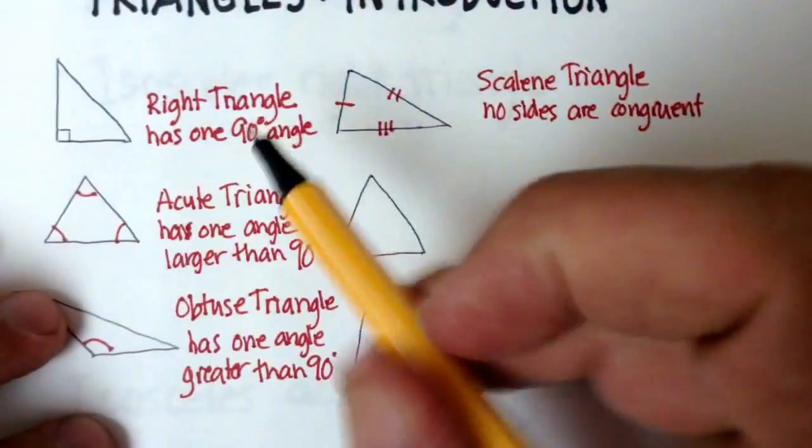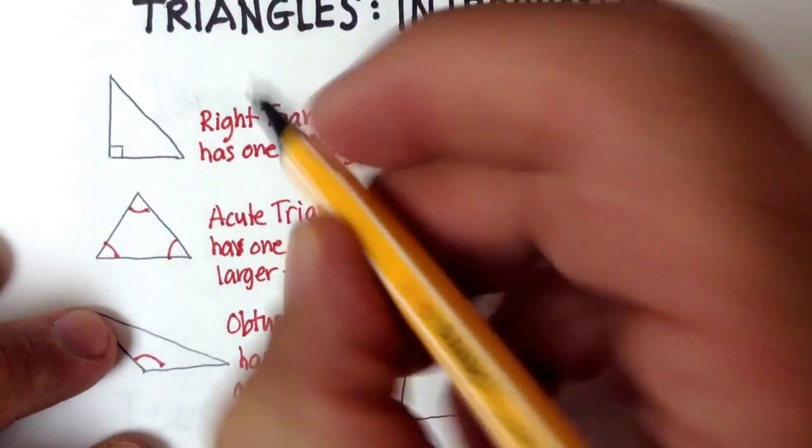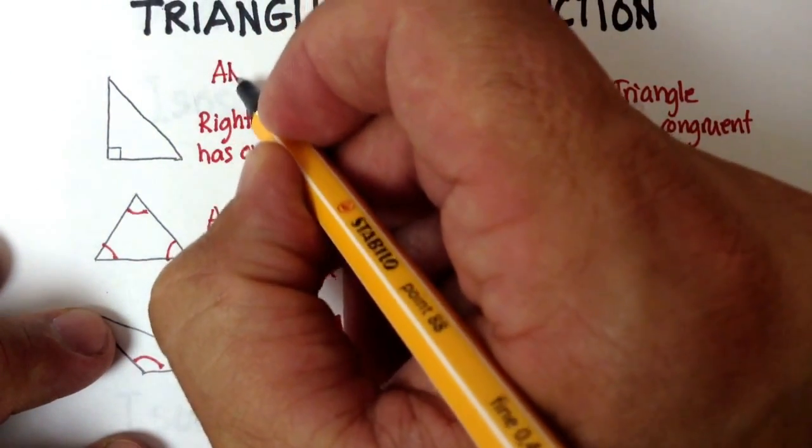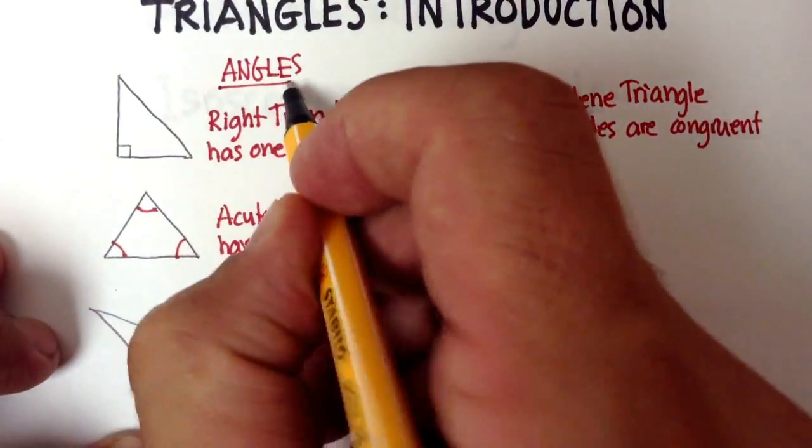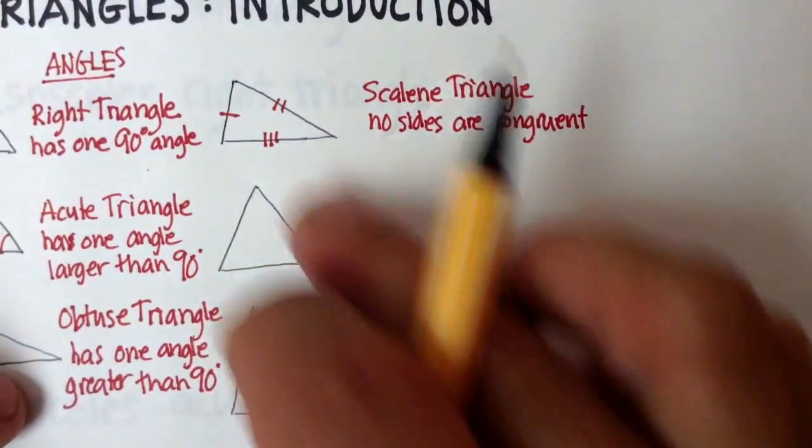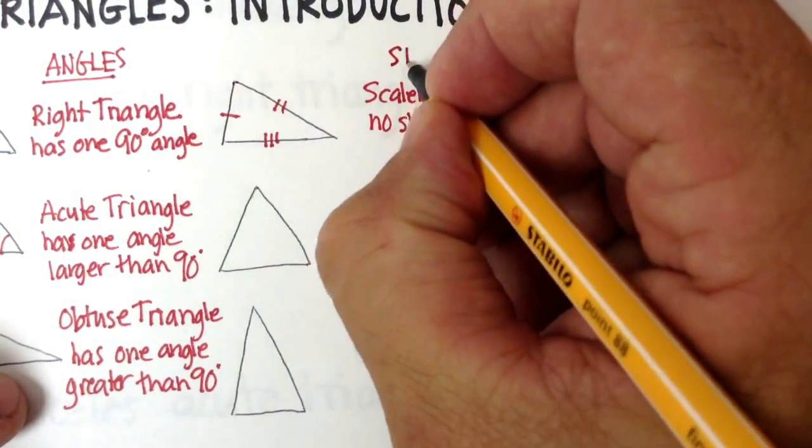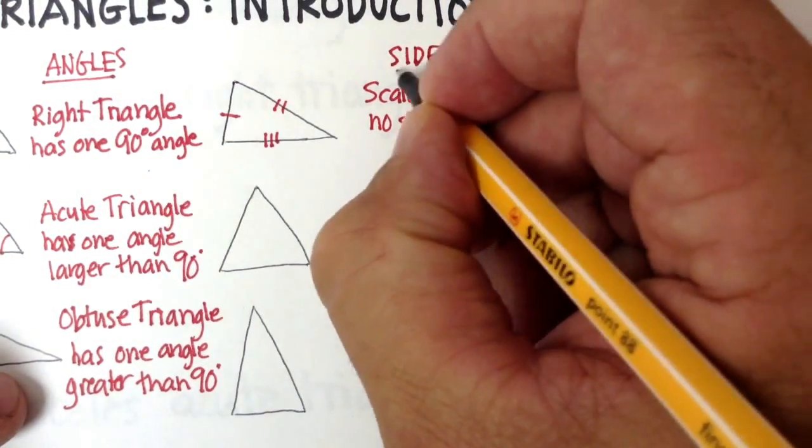Now, you'll notice that with these triangles over here, we were talking about the actual angles. Now, with these triangles, we're going to talk about the sides to define their characteristics.